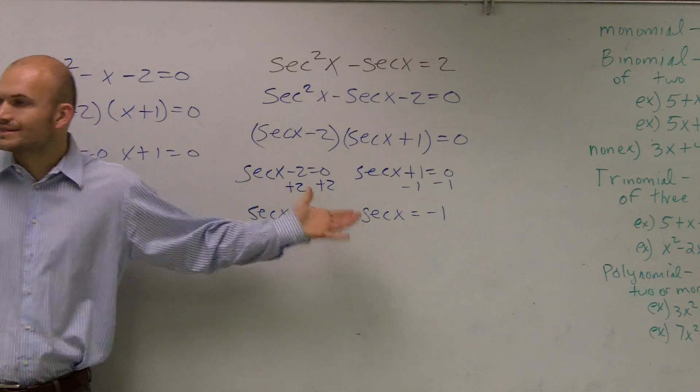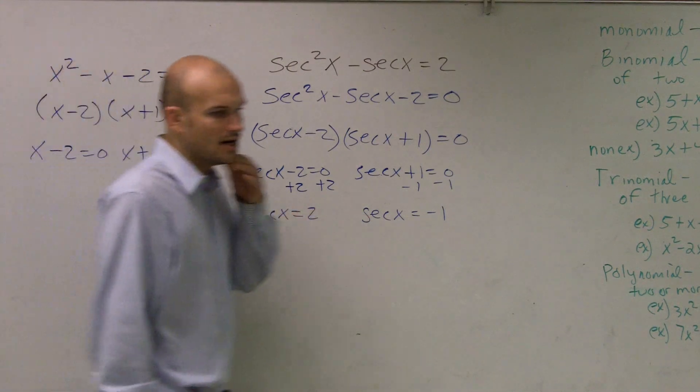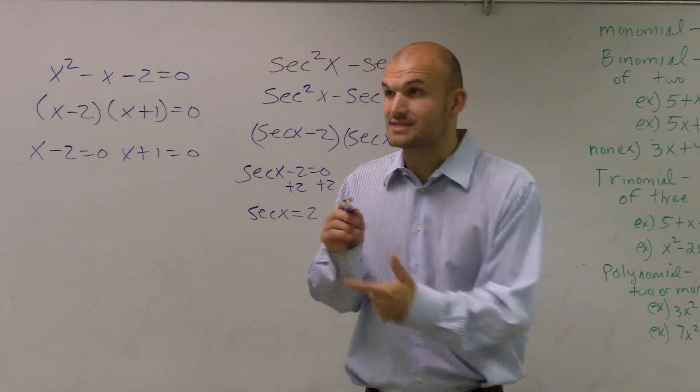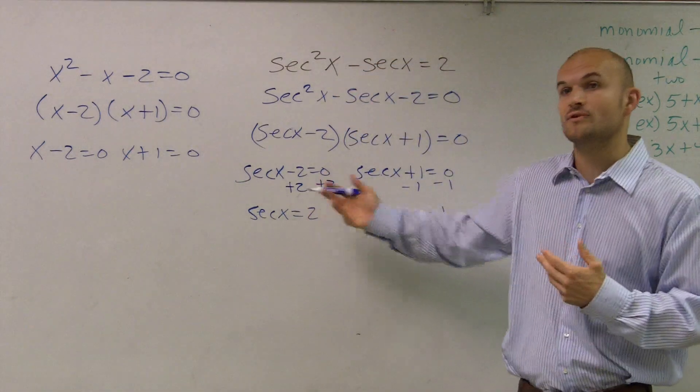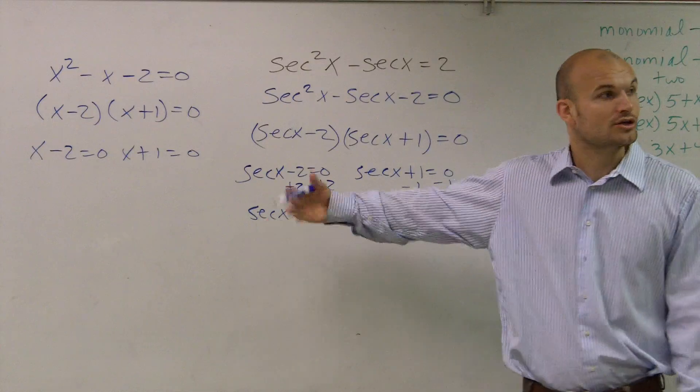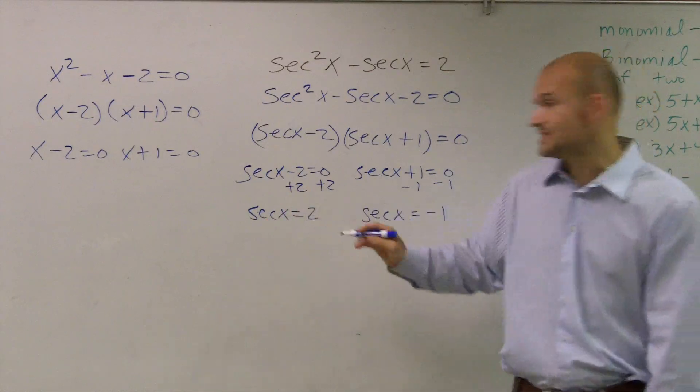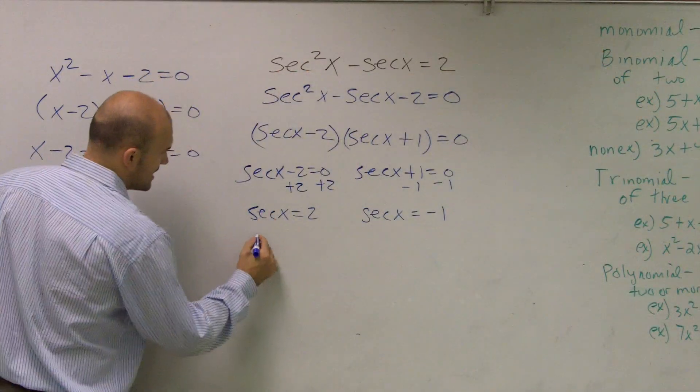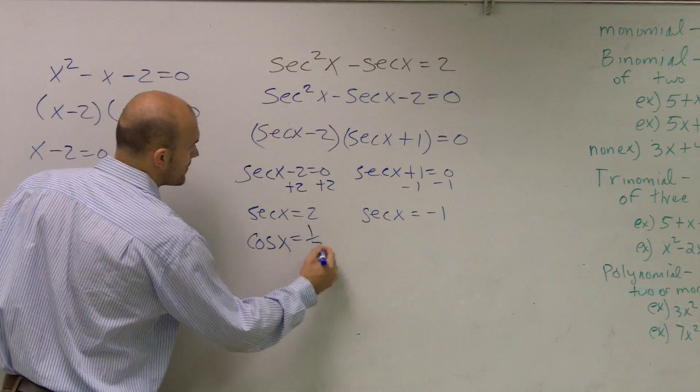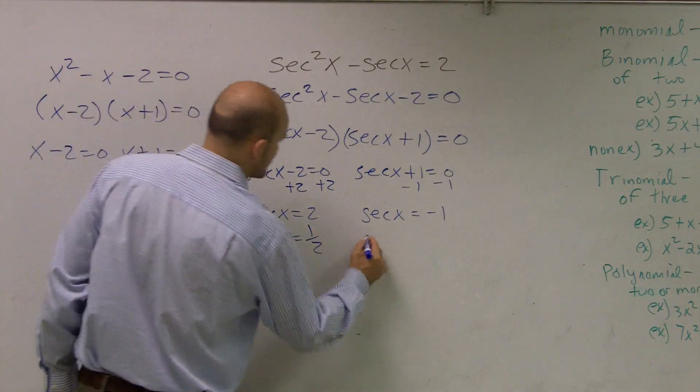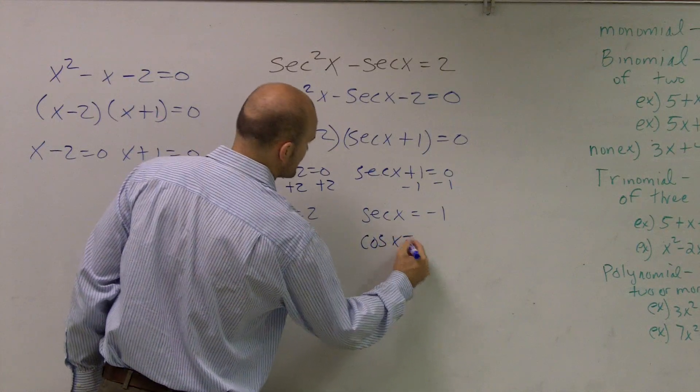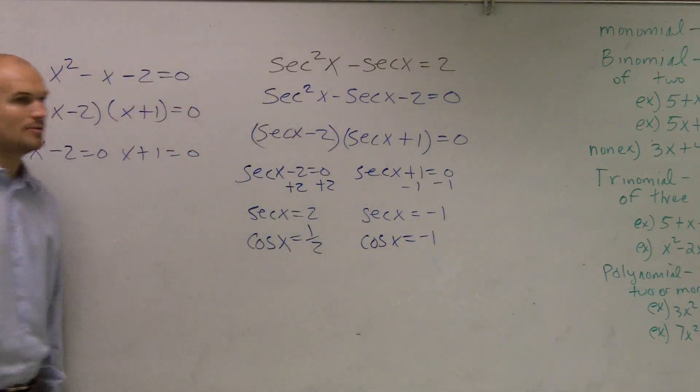Well, how do I figure out what the secant is? It's pretty difficult for us to do this. It's difficult for us to do cosecant and it's difficult for us to do cotangent. So what we can do is remember what our reciprocals are. Remember, cosine is the reciprocal of secant. So I can say then that cosine is equal to the reciprocal of 2 over 1, which would be 1 half. And cosine of x is still going to be negative 1.